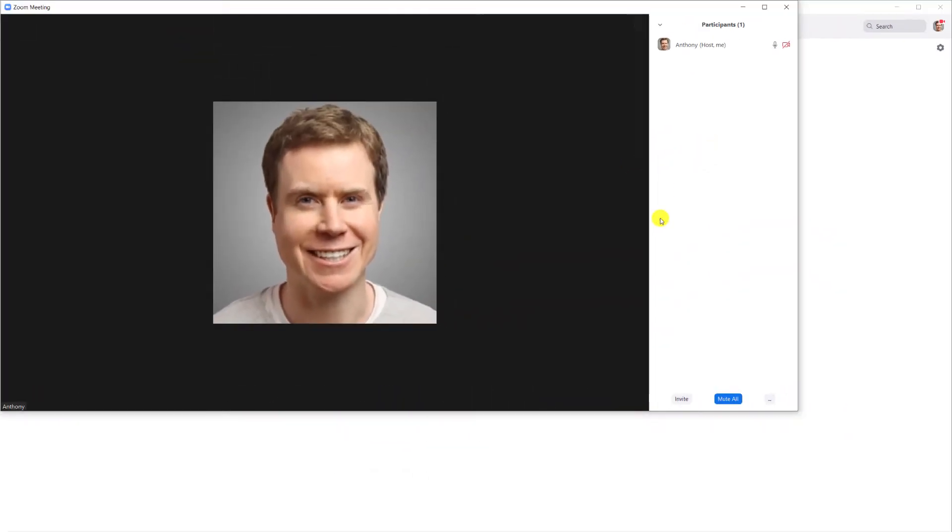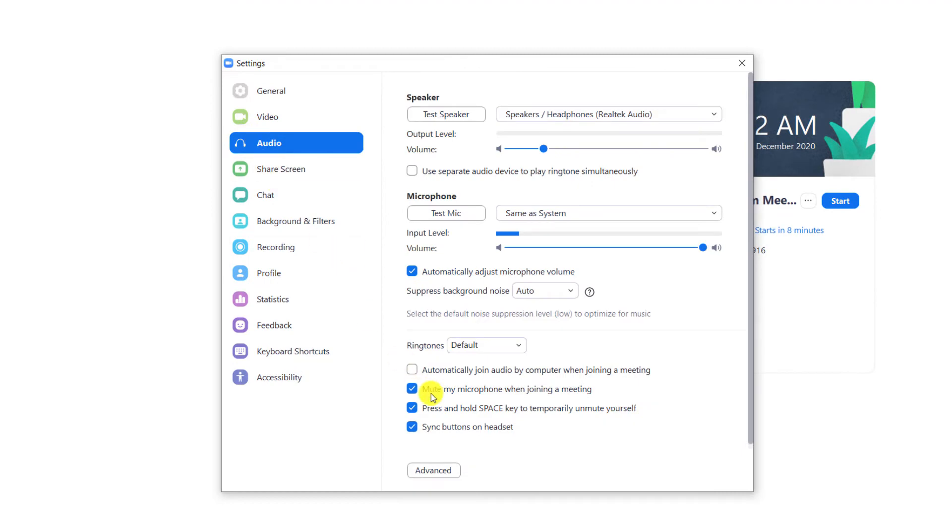If you're not in a meeting, you can access the same setting by clicking on the little settings icon in the top right corner of the Zoom app. There are similar options if you are using the Zoom app on your mobile.